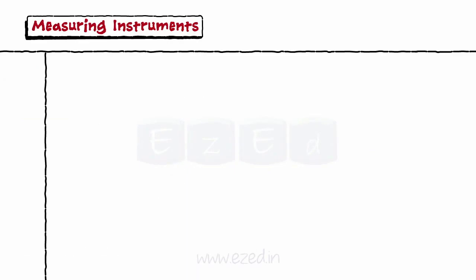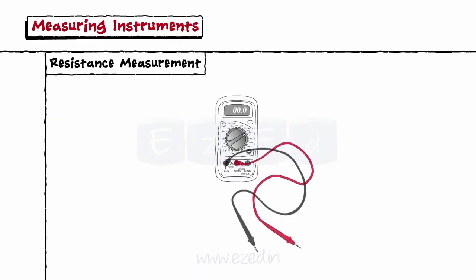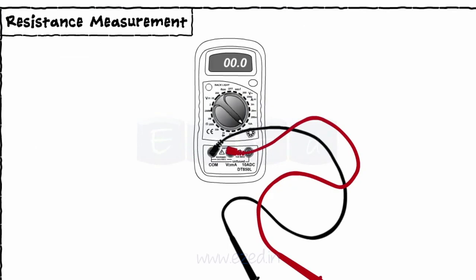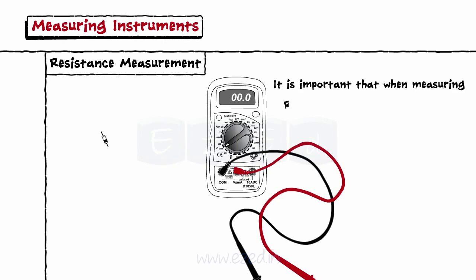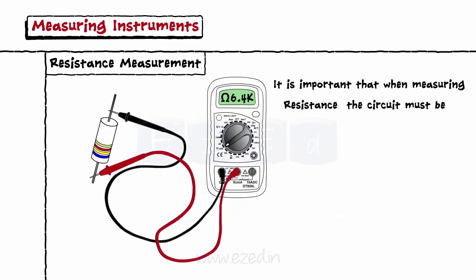The last technique is resistance measurement. For this, the dial is turned to the range with an OHM symbol. It is important that when measuring resistance, the circuit must be de-energized or turned off, or else the circuit might damage the meter.